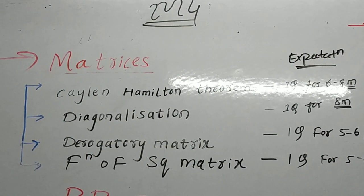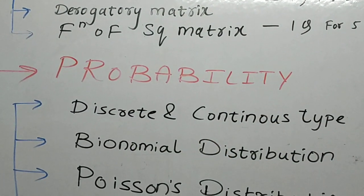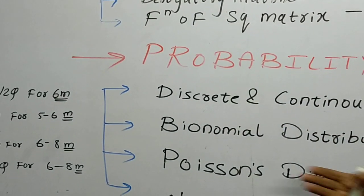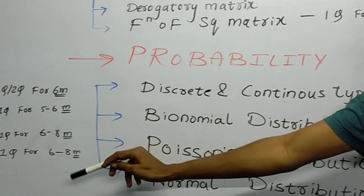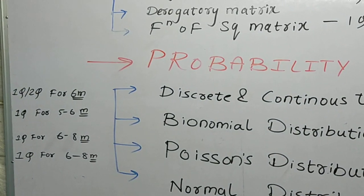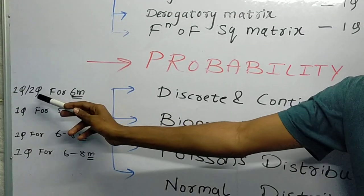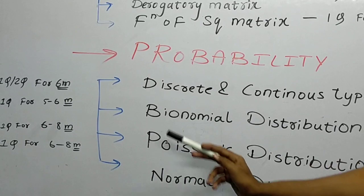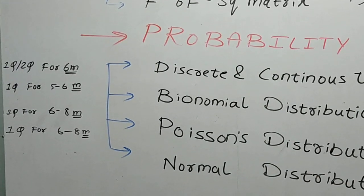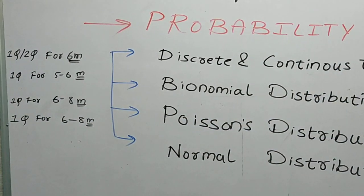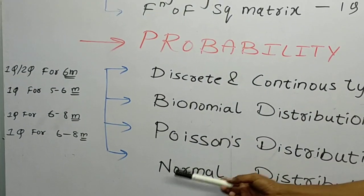Let's move on to the next chapter. In probability, there are four topics: discrete and continuous type, binomial distribution, Poisson distribution, and normal distribution. Discrete and continuous type — one question for six marks. Binomial distribution — one question for five to six marks. Poisson distribution — one question for six to eight marks. Normal distribution — one question for six to eight marks.